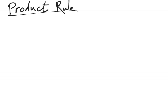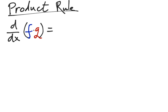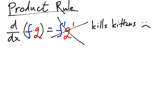First things first, let's talk about the product rule. The product rule is a rule we use to take the derivative of two functions that are multiplied with each other. So we have f multiplied by g. You might guess the derivative is just f prime times g prime, because you just multiply the derivatives — that seems logical. Unfortunately, it is not right, and please don't write this because this answer kills kittens, and we don't want to do that.